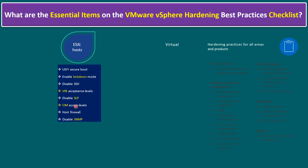As we are aware, the ESXi host is one of the key components in VMware vSphere. Within the VMware vSphere ESXi host, one of the main hardening checklist items is UEFI Secure Boot — Unified Extensible Firmware Interface Secure Boot. This is a secure boot option while booting the ESXi operating system. Once the ESXi host implementation is completed, another hardening option is to enable lockdown mode.